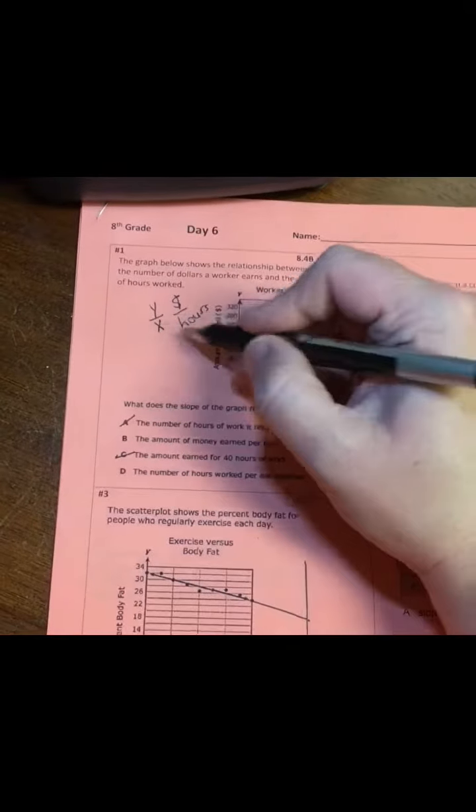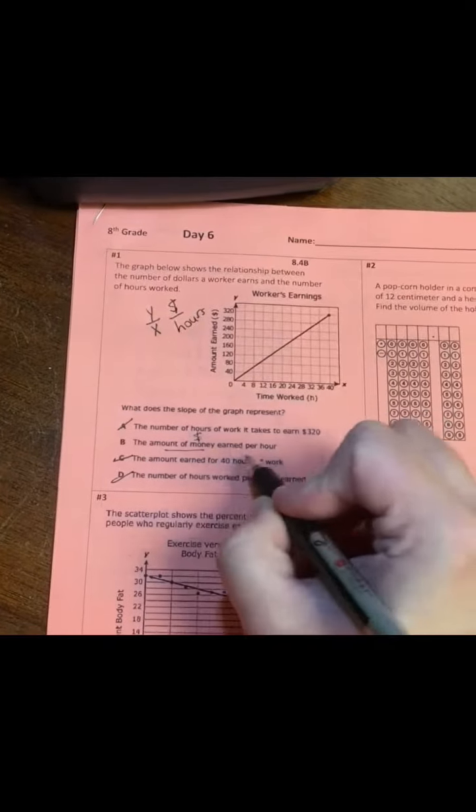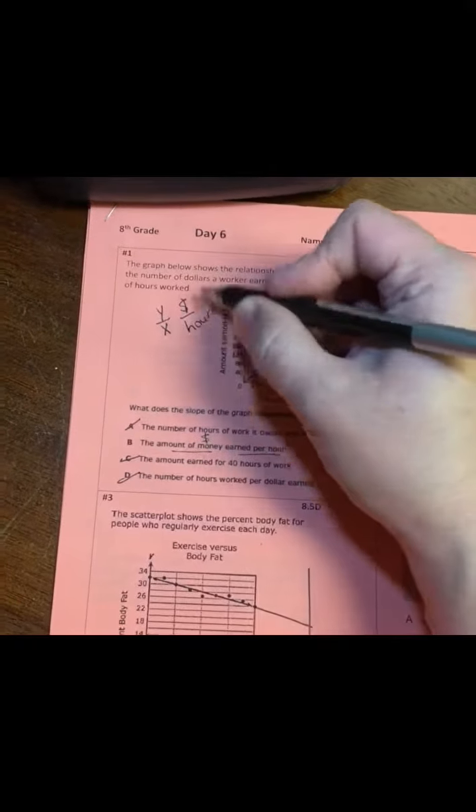The number of hours worked per dollar earned, that is this but upside down, so that's not it. So the amount of money earned per hour, okay, your y over your x.